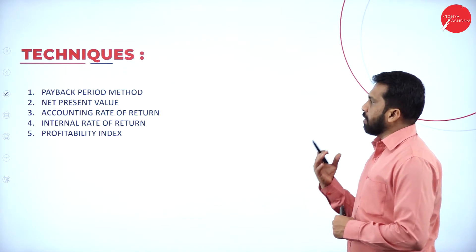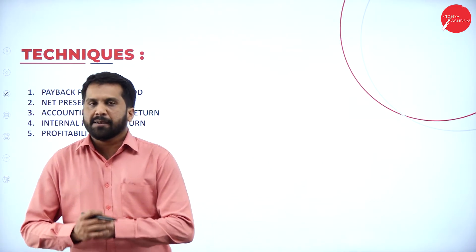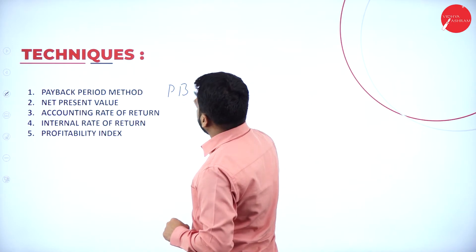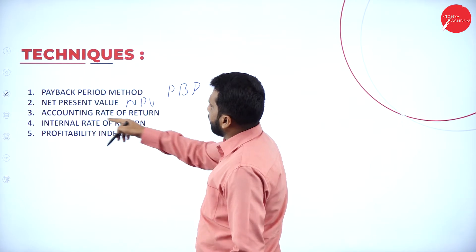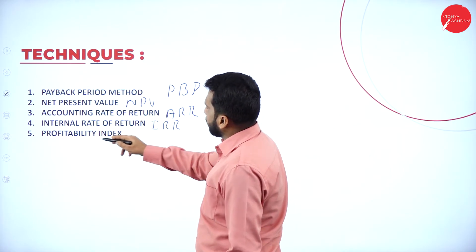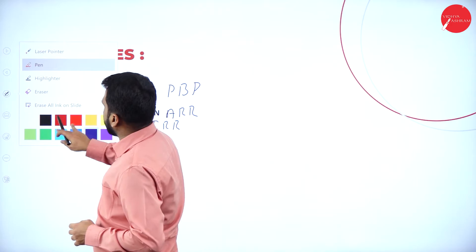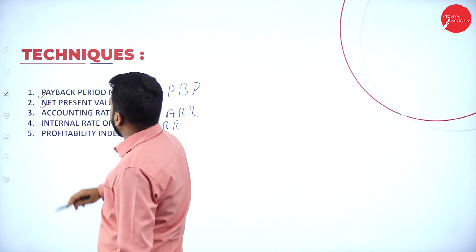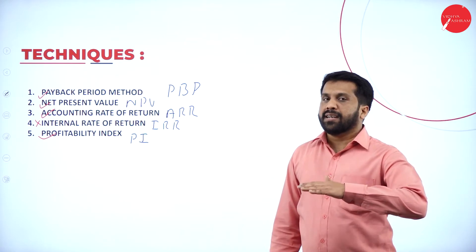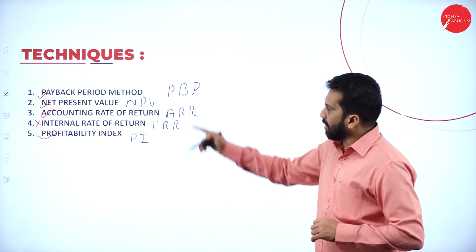Now, techniques of capital budgeting — there are five techniques: payback period, NPV (Net Present Value), ARR, IRR, and profitability index. For your exam, concentrate on payback period, net present value, ARR, and profitability index. IRR may be asked but the probability is less, so we will cover it after completing the other four.